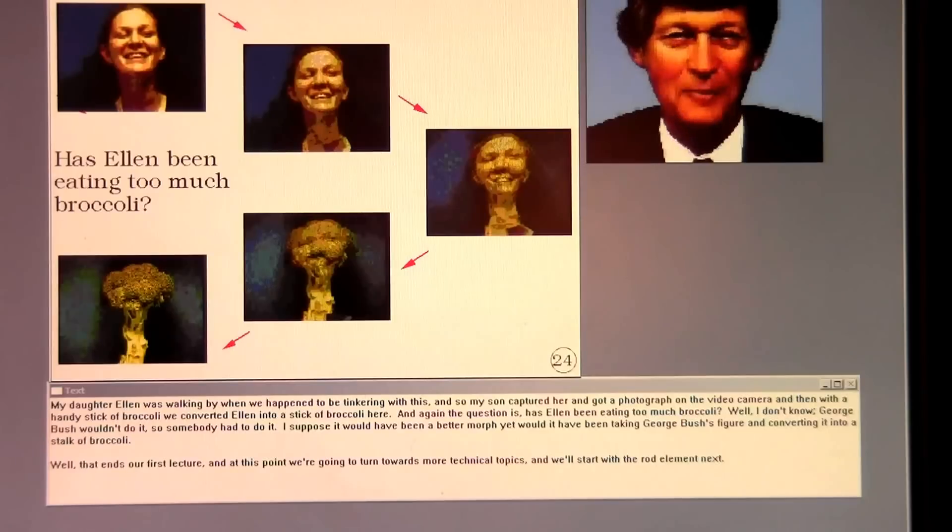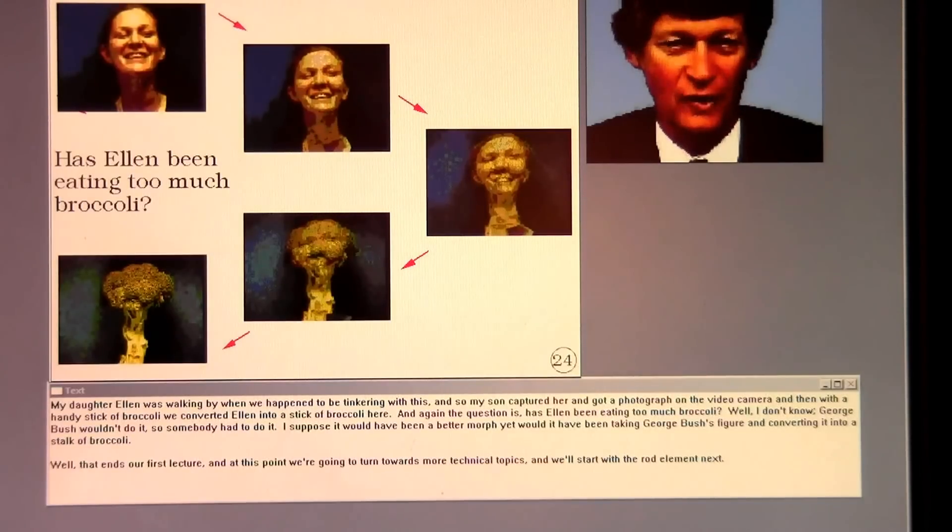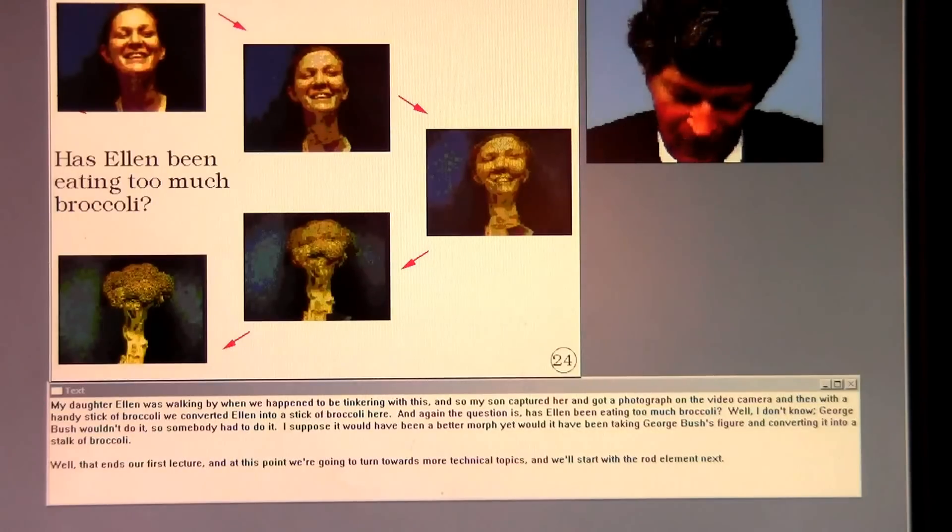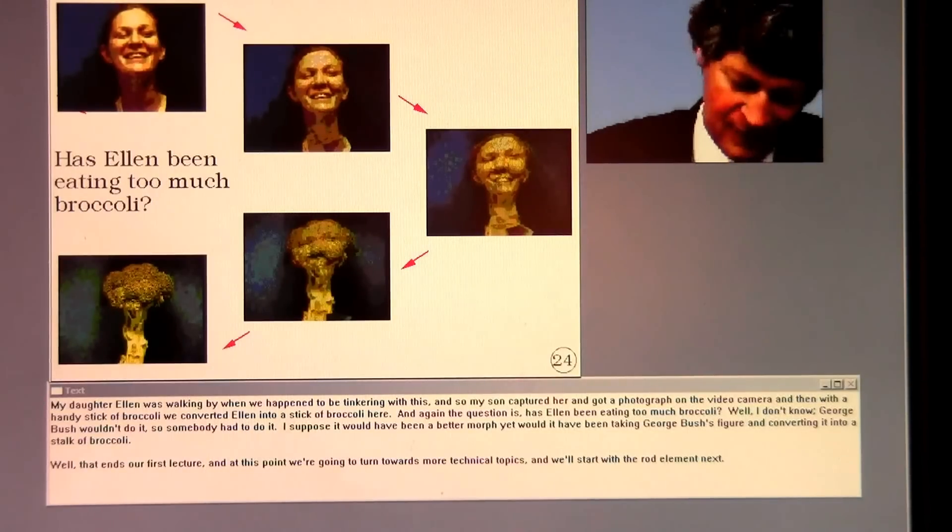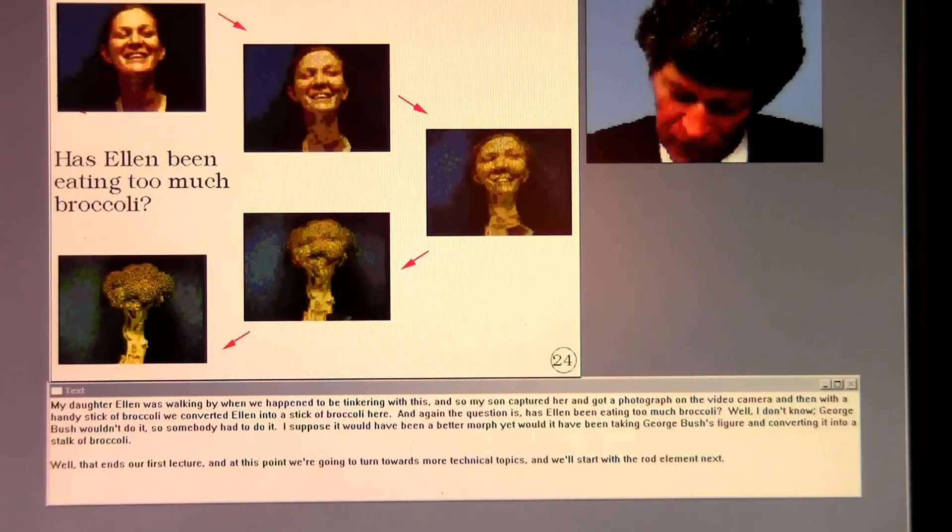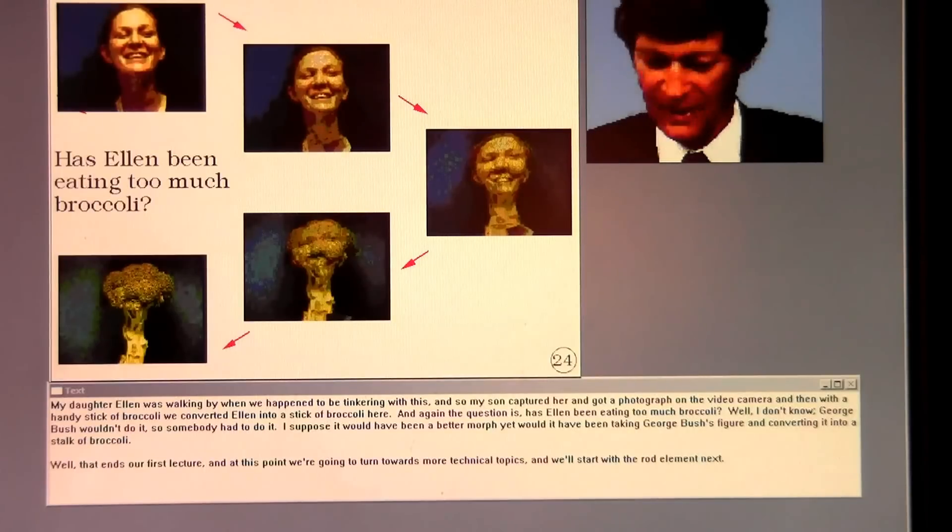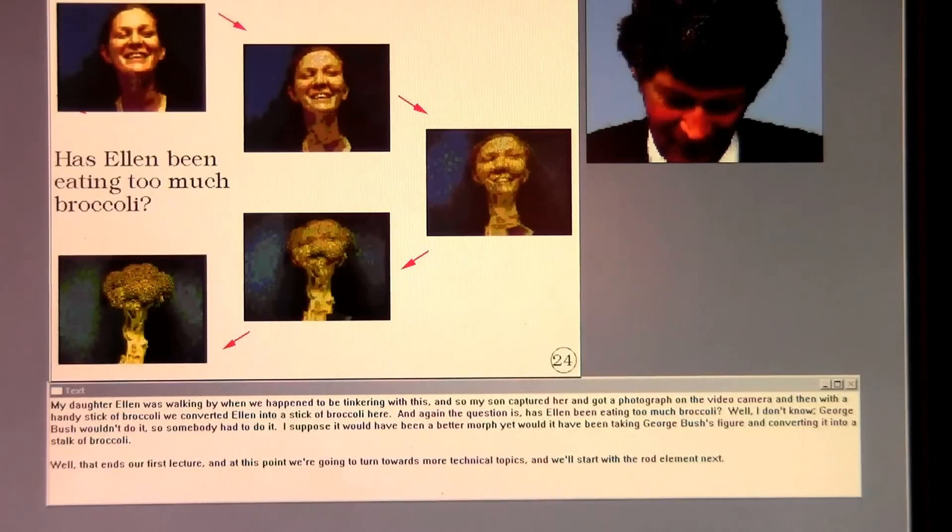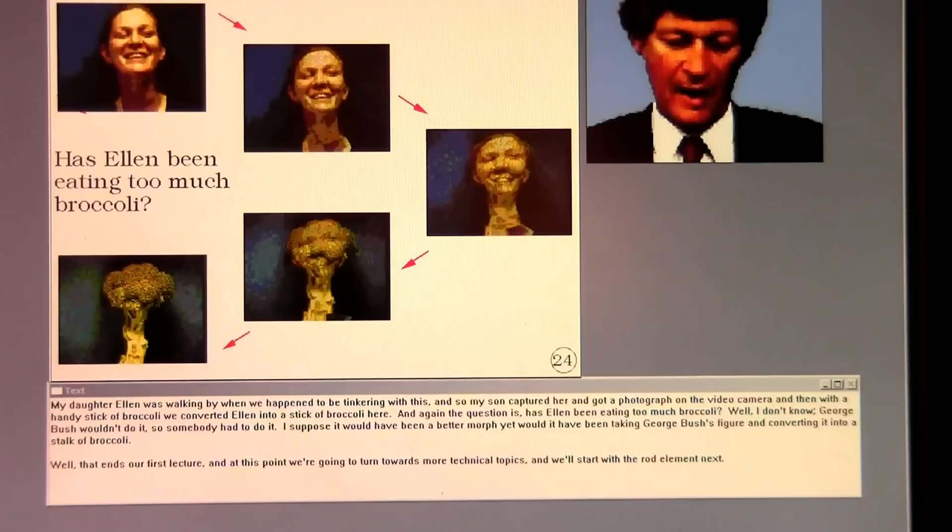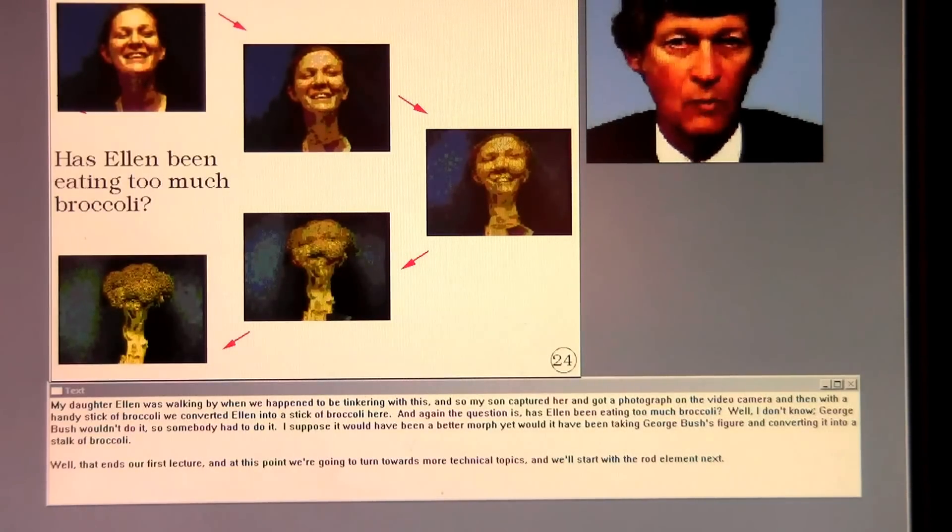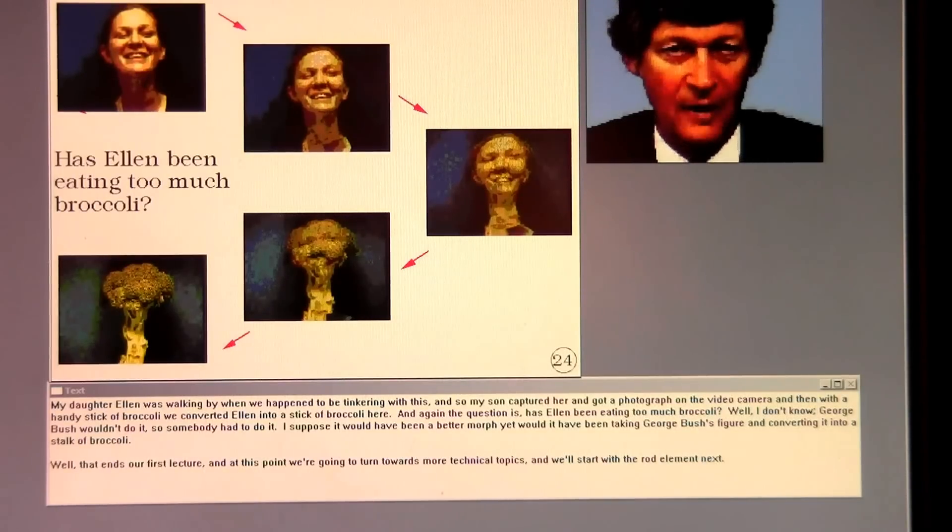My daughter Ellen was walking by when we happened to be tinkering with this. And so my son captured her and got a photograph on a video camera. And then with a handy stick of broccoli, we converted Ellen into a stick of broccoli here. And again the question, has Ellen been eating too much broccoli? George Bush wouldn't do it, so somebody had to do it. That ends our first lecture. And at this point we're going to turn toward more technical topics. And we'll start with the rod element next.